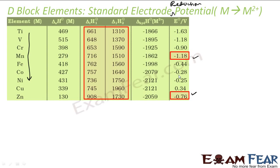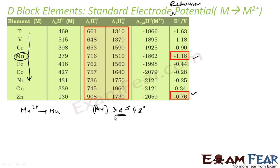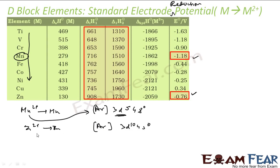The irregularities are due to the extra stability of half-filled subshells. For example, for Mn: we're talking about reduction potential of Mn²⁺ → Mn. The electronic configuration of Mn²⁺ is [Ar] 3d⁵ 4s⁰ — which is half-filled. Since it is half-filled, Mn²⁺ is very stable and won't easily accept electrons to form Mn. For Zn²⁺ → Zn, the configuration of Zn²⁺ is 3d¹⁰ — a fully filled d subshell, which is also relatively stable. Because of these half-filled or fully filled configurations, it is difficult to add electrons, causing the irregularities.